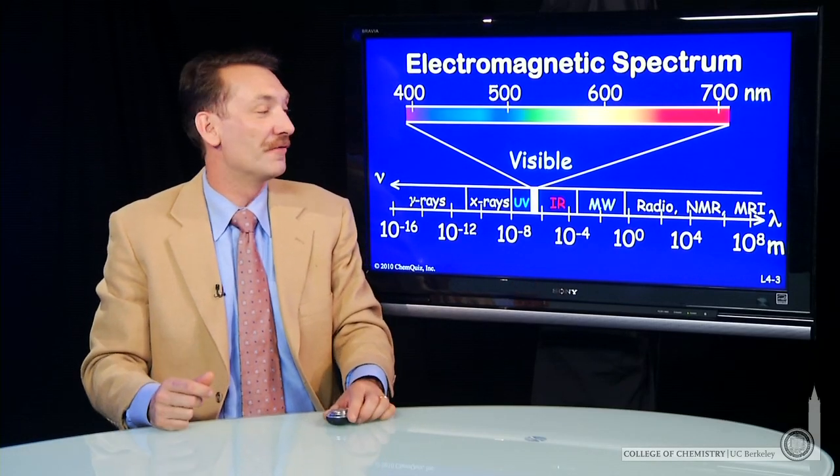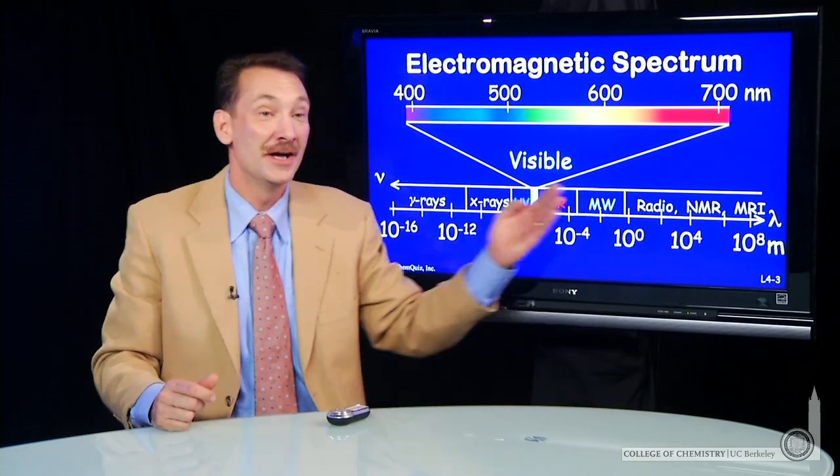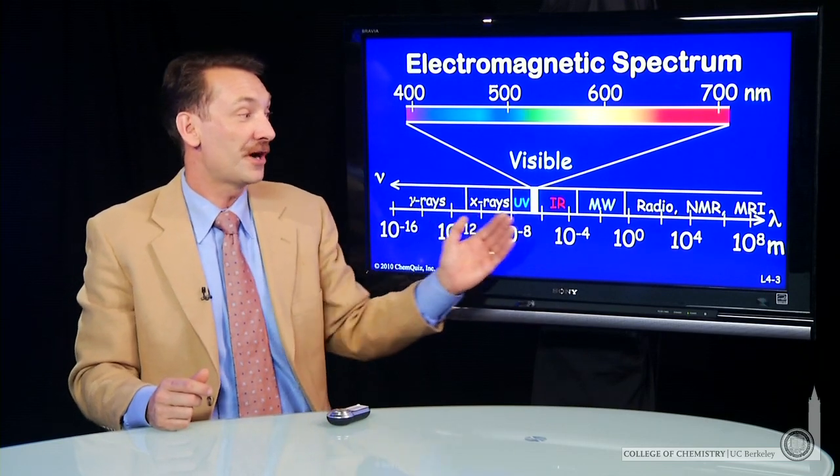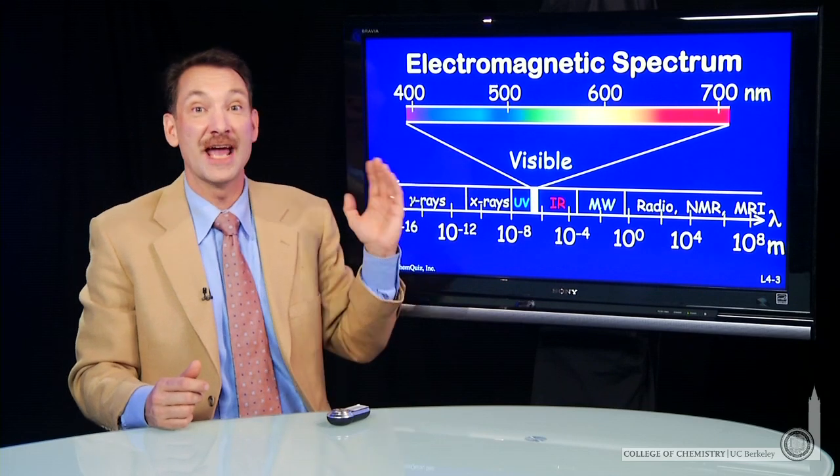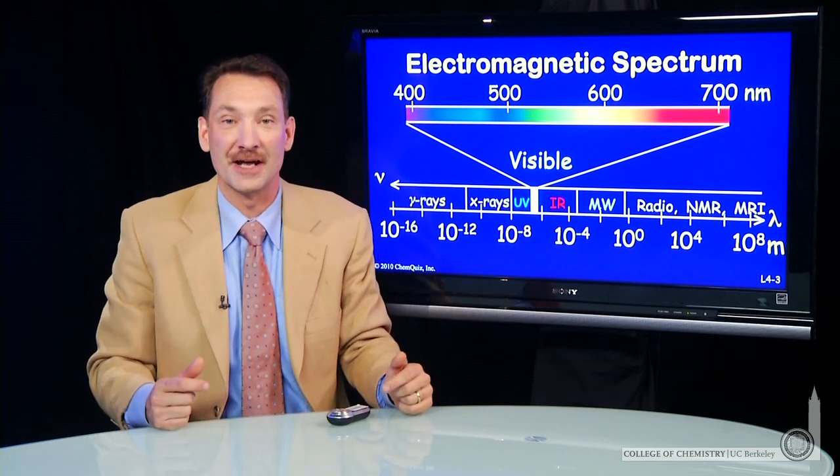Electromagnetic radiation is composed of wavelengths from very long to very short. We've talked about the relationship between the wavelength, the frequency, and the speed of electromagnetic radiation.